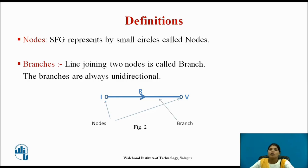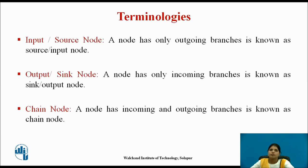Now we see the terminologies related to signal flow graph one by one. First: input node — a node that has only outgoing branches is known as an input node or source node. Output node — also called a sink node — a node that has only incoming branches. Chain node — a node that has both incoming and outgoing branches is known as a chain node.